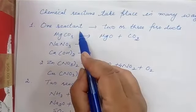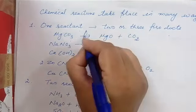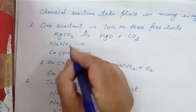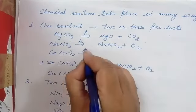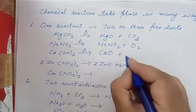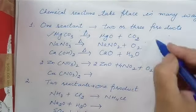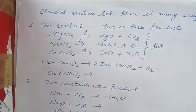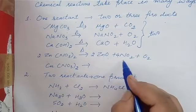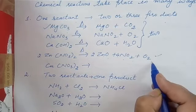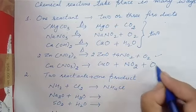The first type is when the reactant is only one but two or three products are formed — this is a decomposition reaction. For example, magnesium carbonate when heated decomposes into magnesium oxide and carbon dioxide. Sodium nitrate when heated decomposes into sodium nitrite and oxygen. Calcium hydroxide when heated decomposes into calcium oxide and water. Zinc nitrate decomposes into zinc oxide, nitrogen dioxide, and oxygen. Copper nitrate similarly decomposes into copper oxide, nitrogen dioxide, and oxygen — giving three products.